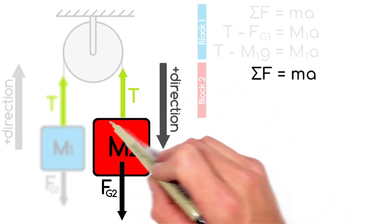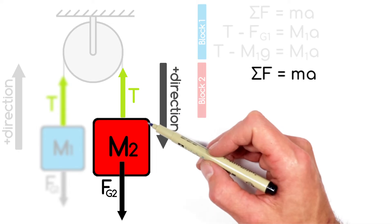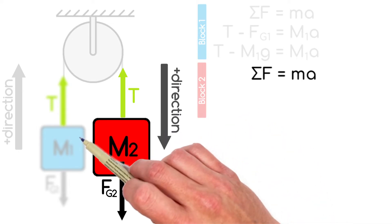But in an Atwood machine, the positive direction switches from one side of the machine to the other.